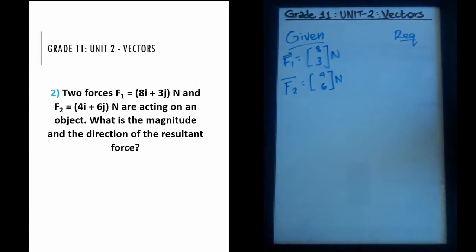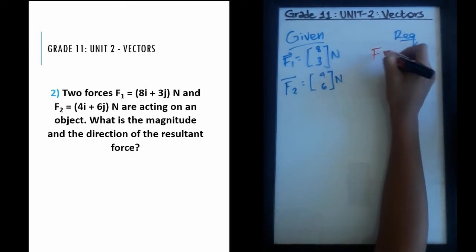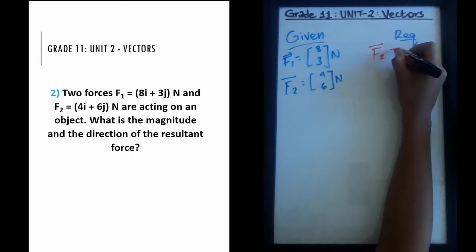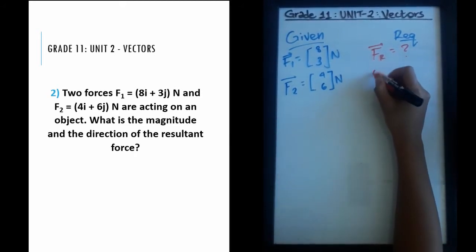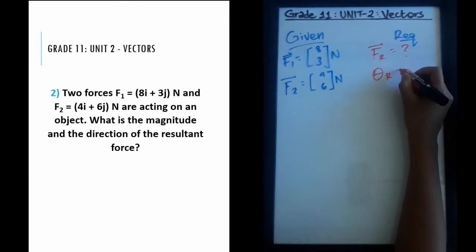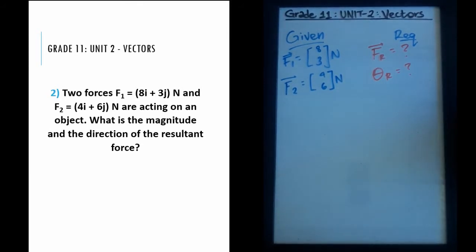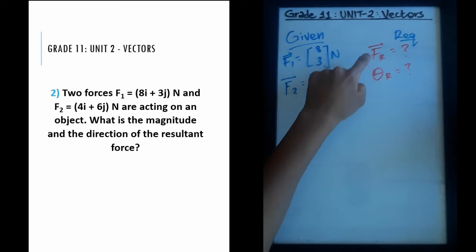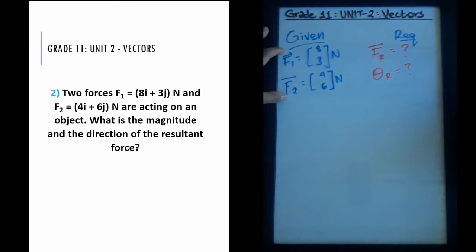We're required to find two things: first, the resultant vector which I'll represent as Fr, and second, the resultant direction which I'll represent with theta-r. This is a two-part problem, but it's really the basics and foundation of vector addition. To find a resultant of any vectors, you just add what you have.